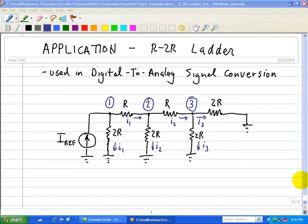Shown here is an R-2R ladder circuit, a binary current divider that finds application in digital-to-analog conversion.